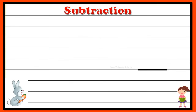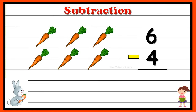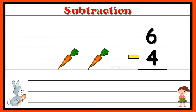So three minus two gives us one. One is the difference between three and two. Now let's take another example. Here we have one, two, three, four, five, six — so totally we have six carrots. The bunny takes four of the carrots, so we write it as minus four. After subtracting, the balance is two carrots left out. So six minus four gives you two.